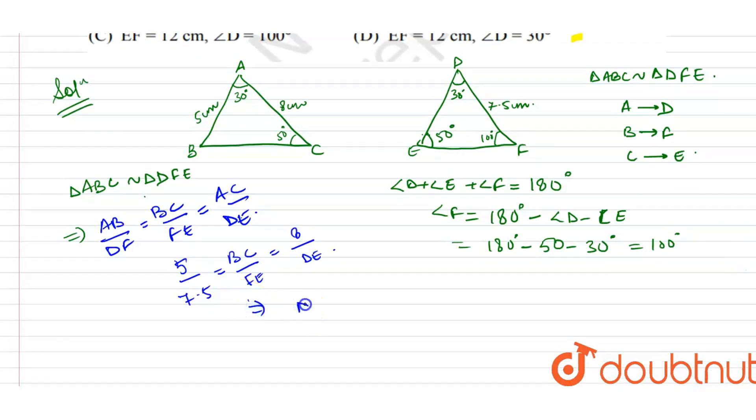The 7.5 over 5 simplifies to 3 by 2. This is 8 times 3/2 which equals 4 times 3. So DE is 12 cm.